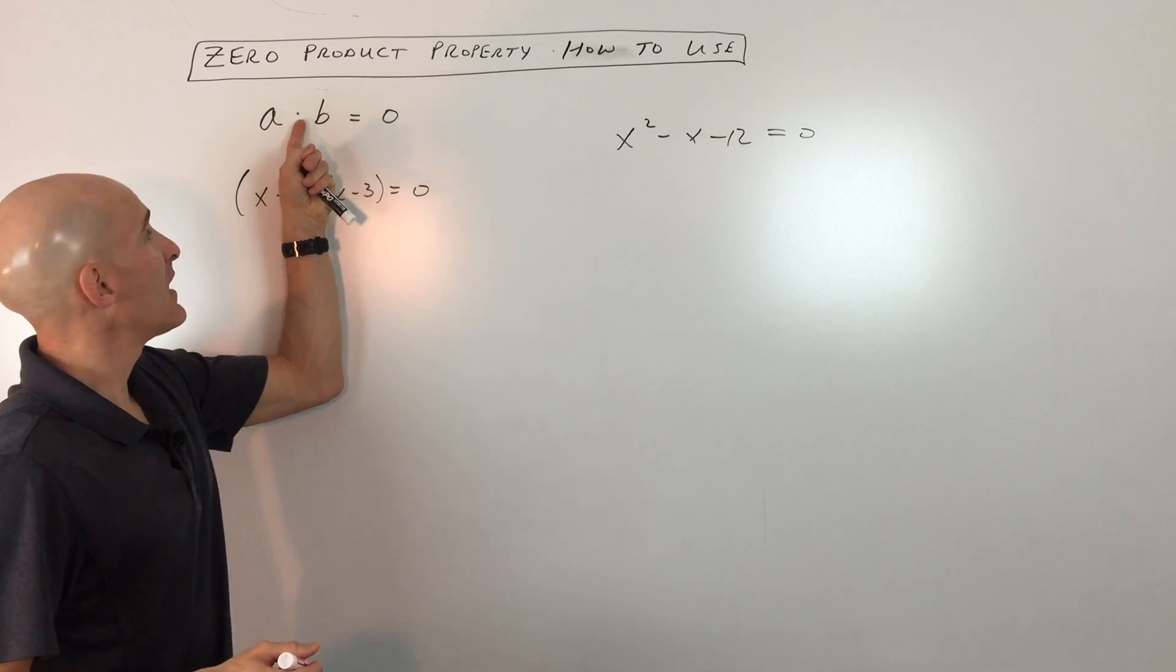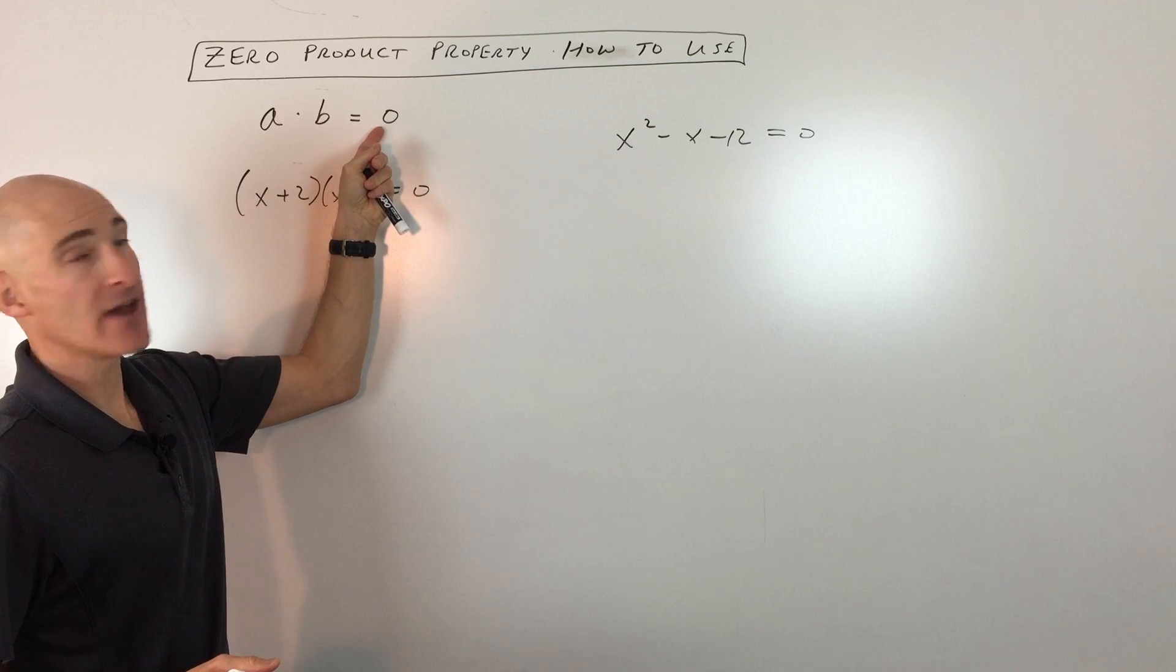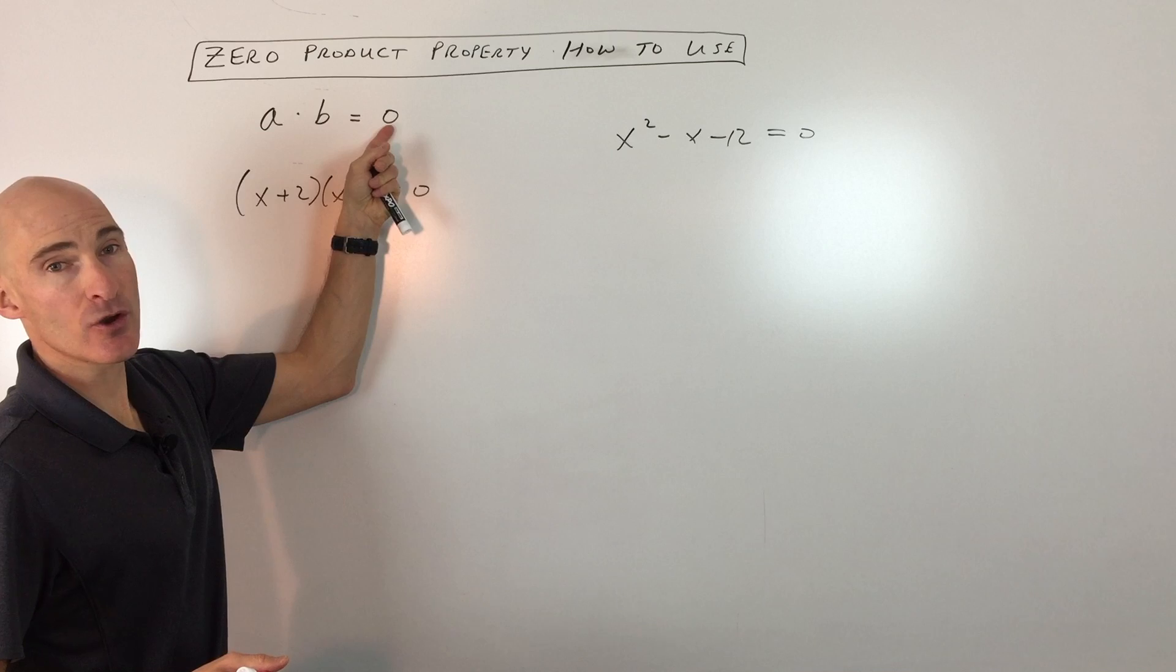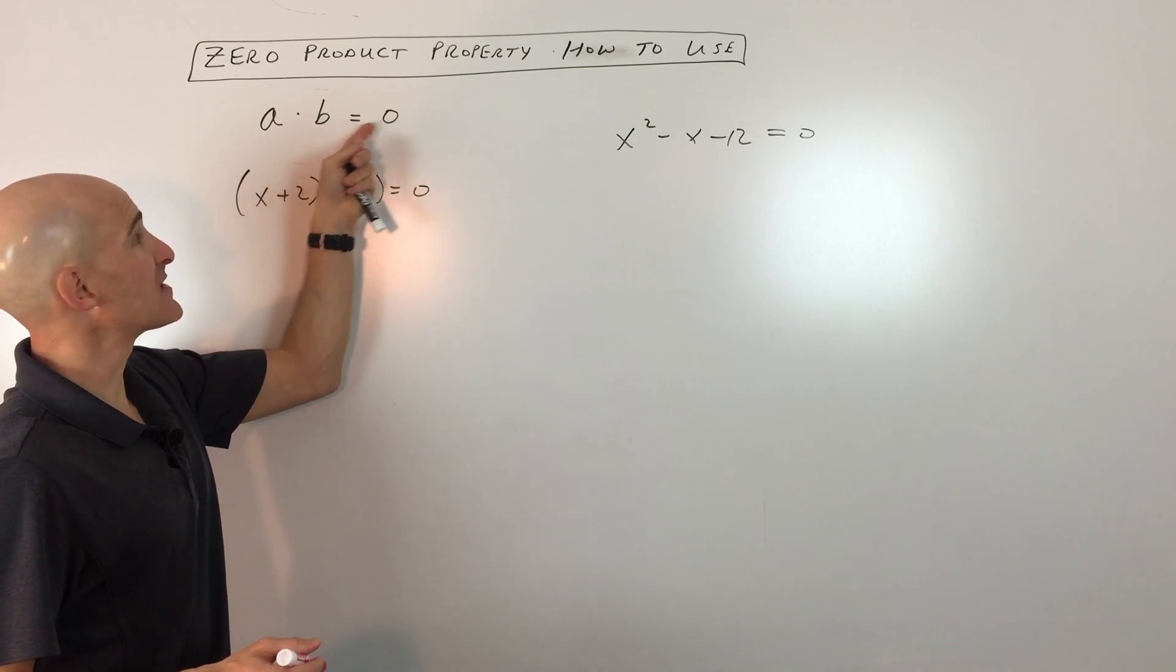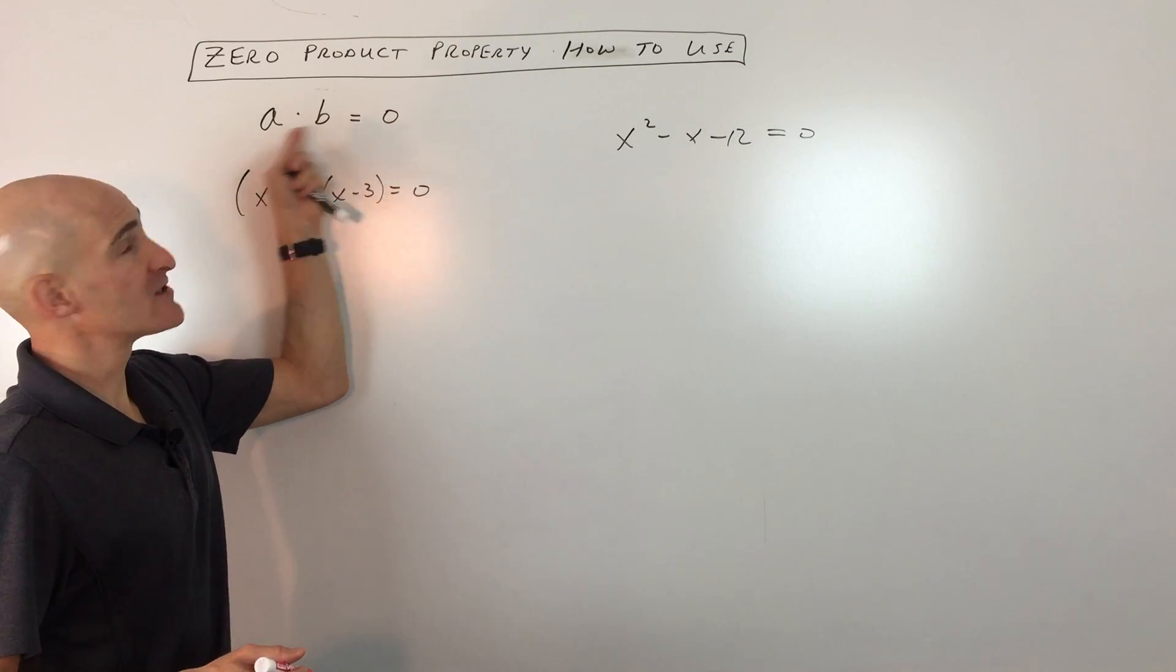The product means times or multiply, and zero is the result of multiplying these two quantities together. Usually you'll see it written in your textbook as A times B equals zero. What it means is that either A is zero, because zero times anything is zero, or B is zero, because zero times anything is zero, or they're both zero.